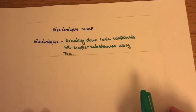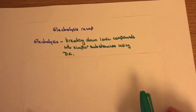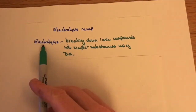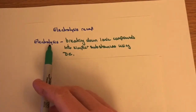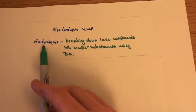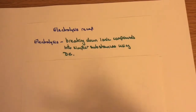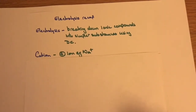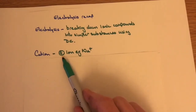Electrolysis — the key phrase here helps us understand it: the '-lysis' part is about breaking down using electricity. So we're going to break down ionic compounds into simpler substances using a direct current. Next are cations — cations are the positive ions.